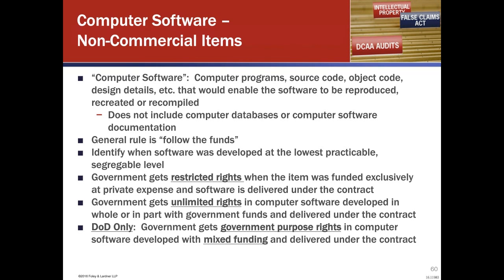Software with restricted rights can be used for the computer for which it was delivered, or copied for a backup computer. If they transfer computers, maybe one broke, they can move it to another — that's okay. If you need to modify, adapt, or combine it with other software, the government can do that. They could also reproduce it for safety purposes — archived or backup. It also says they can disclose that computer software to support contractors. There's also the government purpose rights provision for DOD contracts — similar to technical data, the government can use it for government purposes for a certain period, then receives an unlimited rights license.